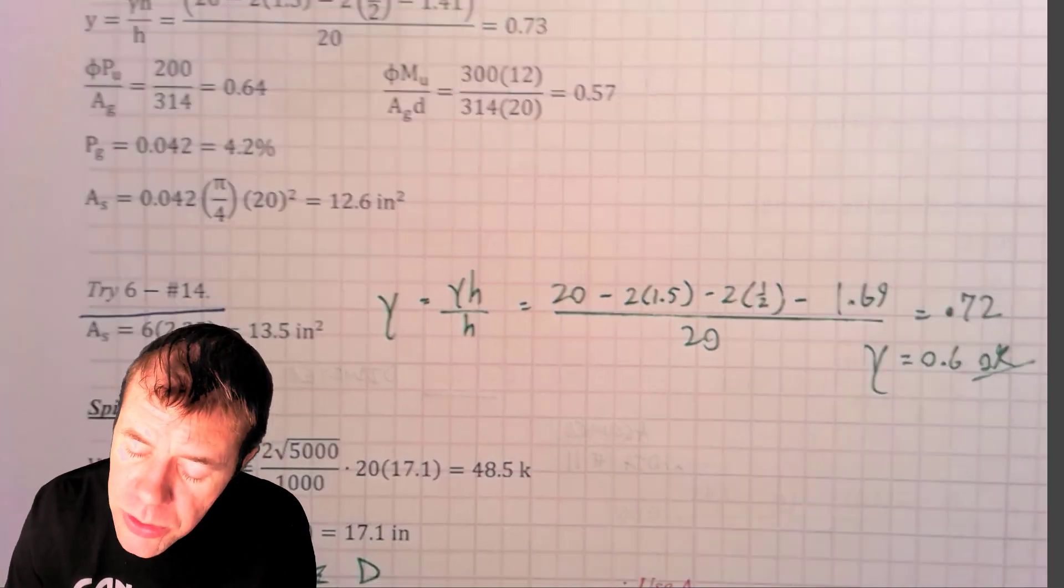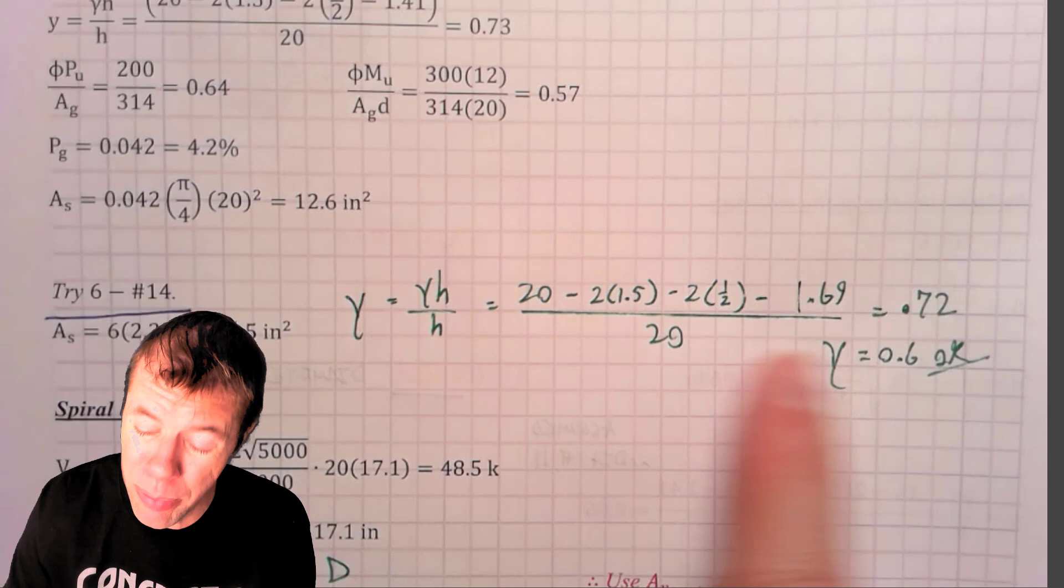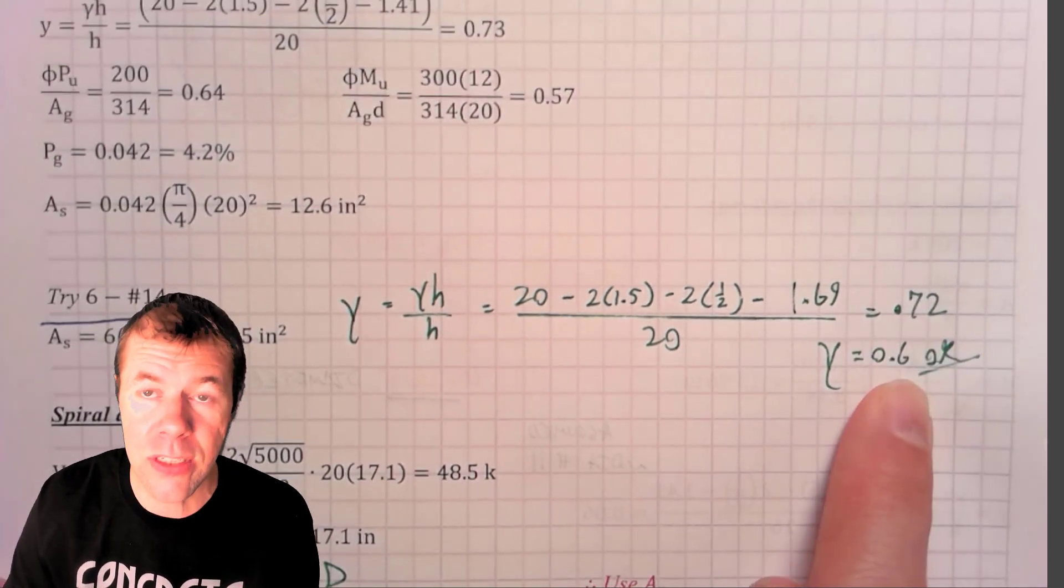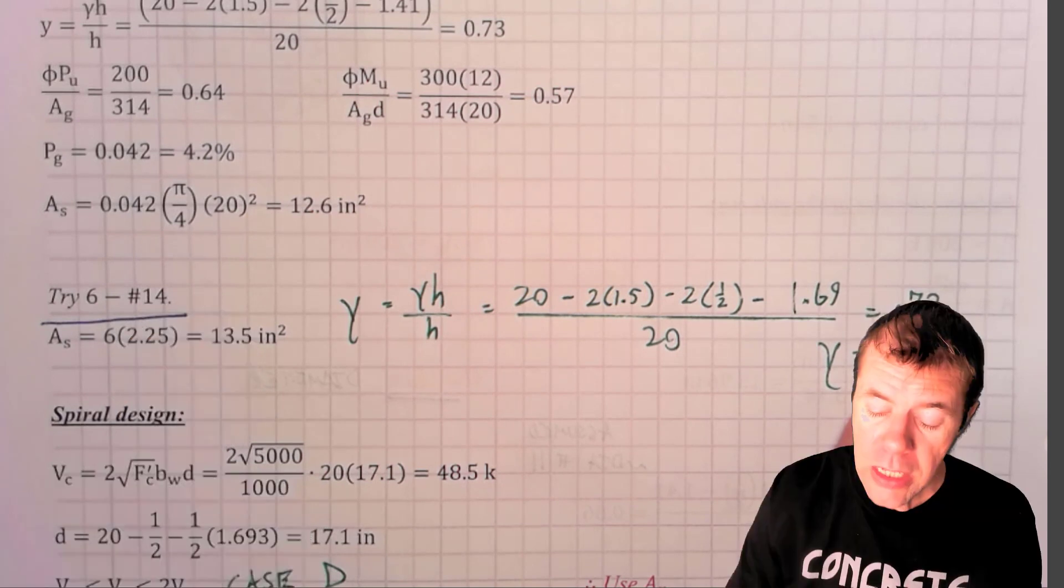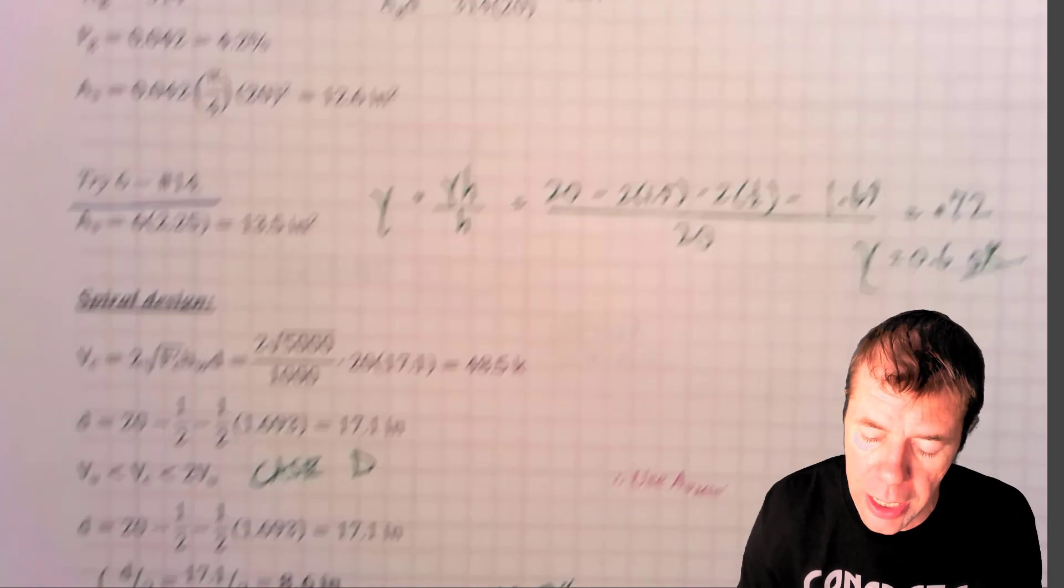But now, I've got to check my gamma. I'm using a larger size bar here than I had before. I do my gamma calculation, and I get 0.72, which is greater than 0.6. It's still conservative. It's still okay. Everything is great. So, now, I've figured out that my 6 number 14s are going to work. Let's go on to our spiral design.